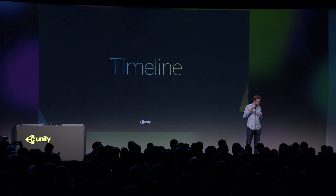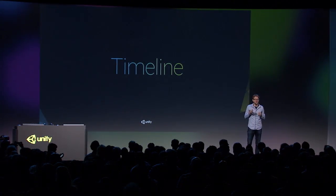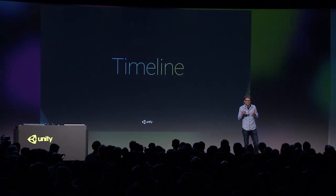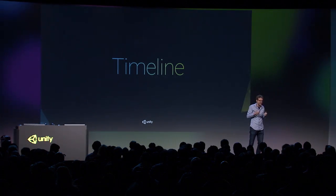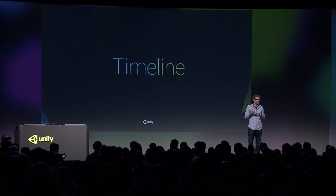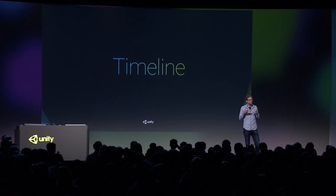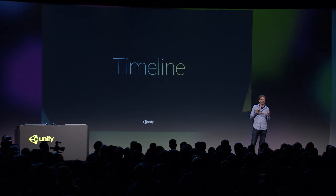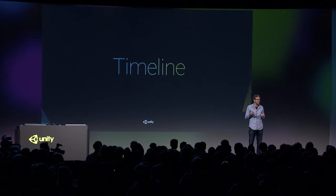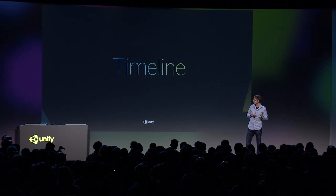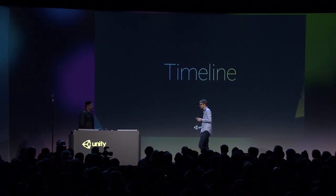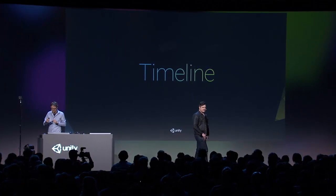Today we're going to see two demos of Timeline. The first one will be done by Adam Myhill. Adam has, for the last 10 or 15 years, been obsessed by cameras, and he joined Unity to bring his experience to our team. He's written a really cool procedural camera system in C Sharp and plugged it on top of the public Timeline API. Timeline has the standard features you'd expect from a sequencer — it supports animation, of course, and audio — and it has auto keyframing and a multi-track interface with the ability to lock and mute tracks.